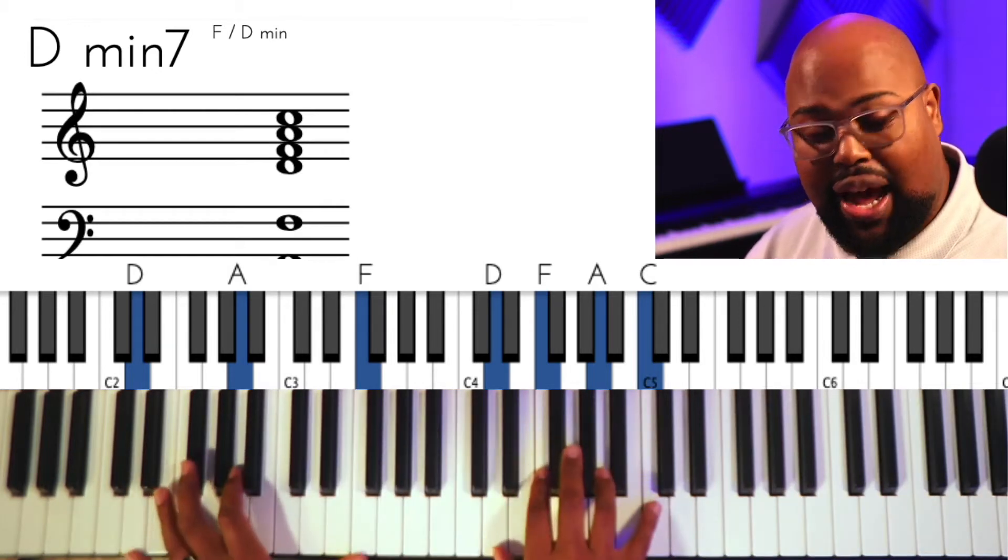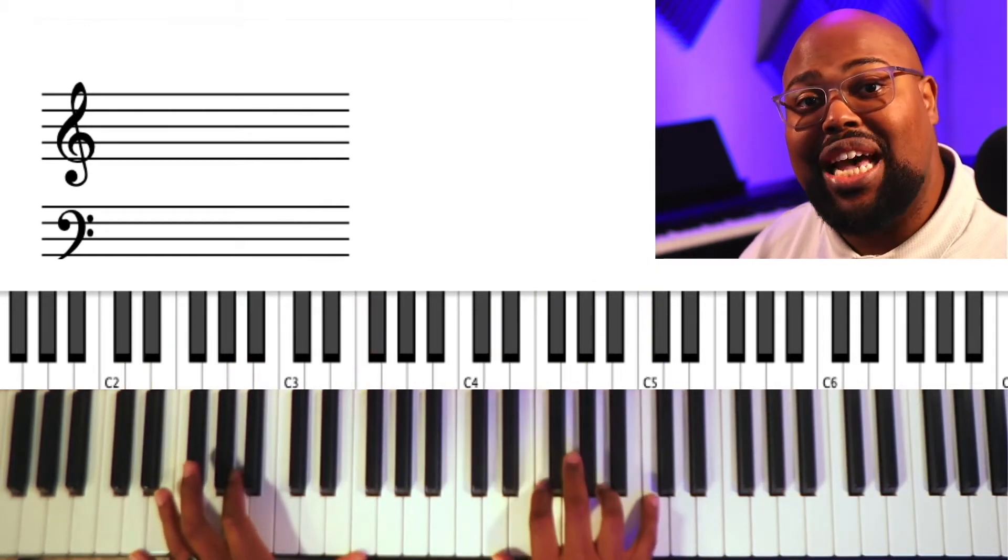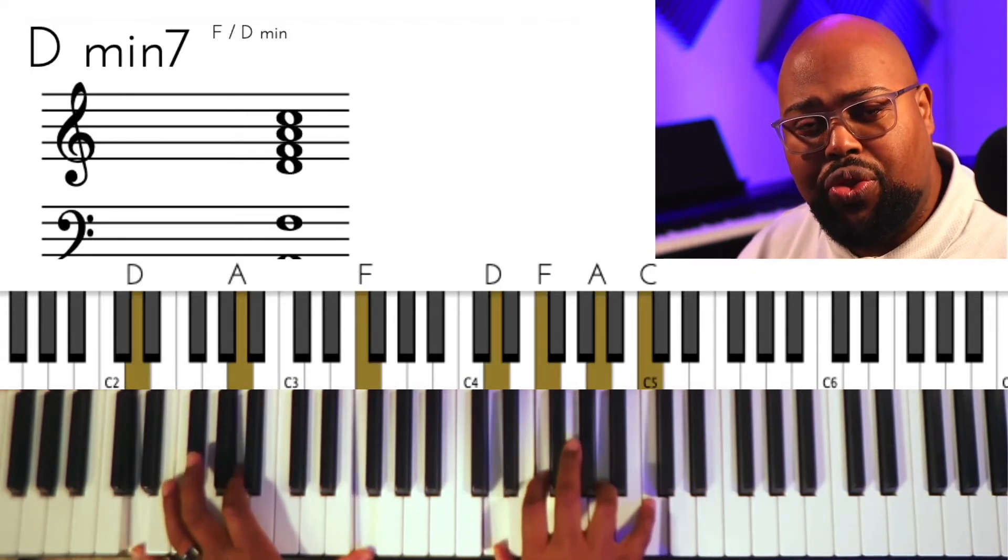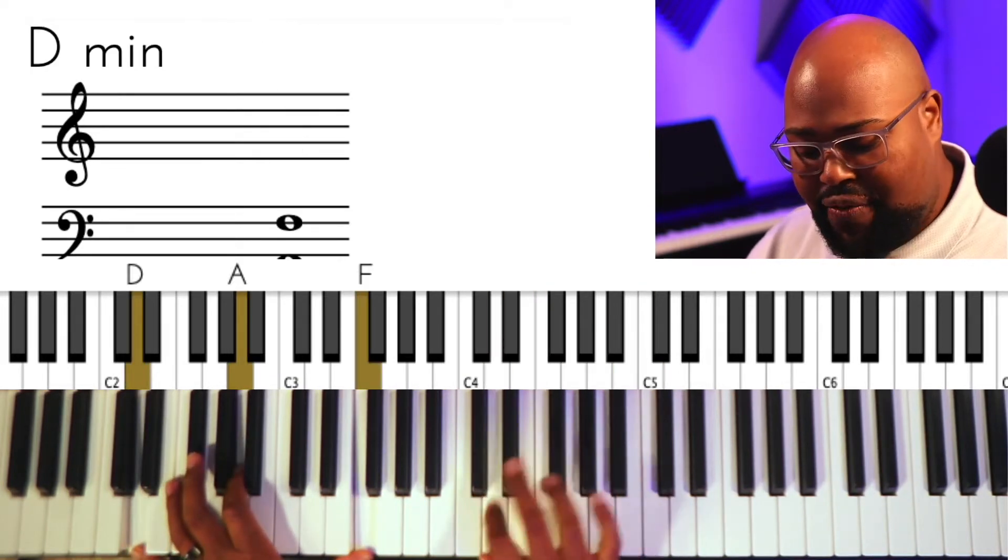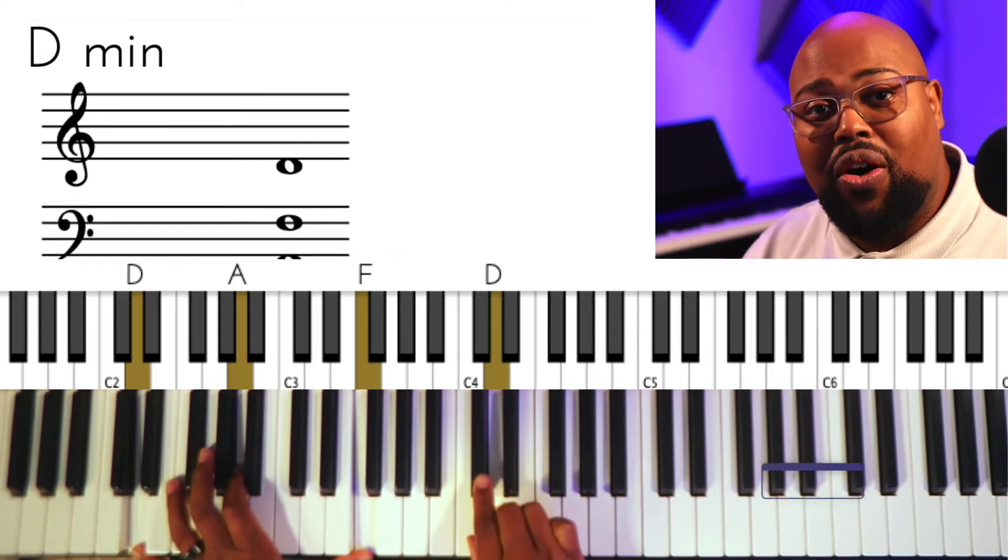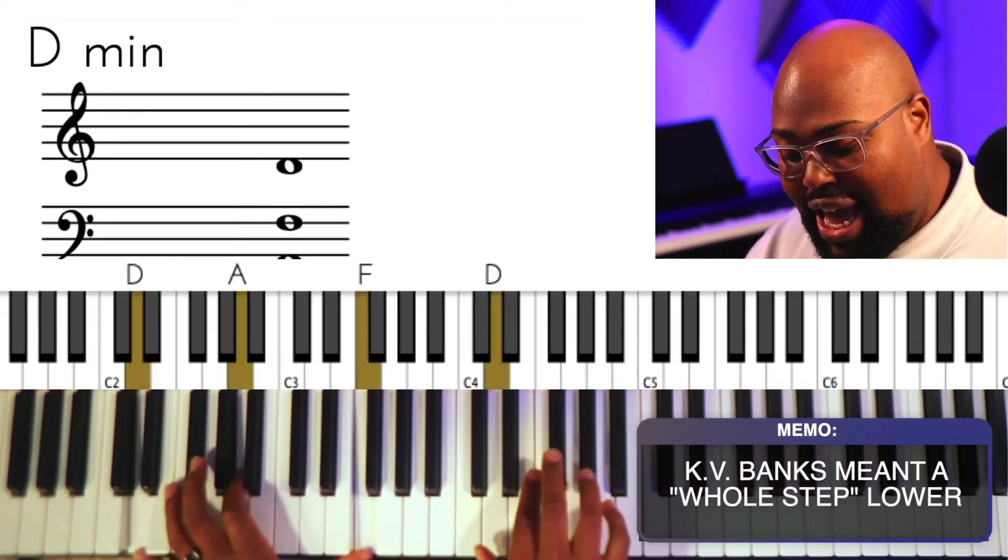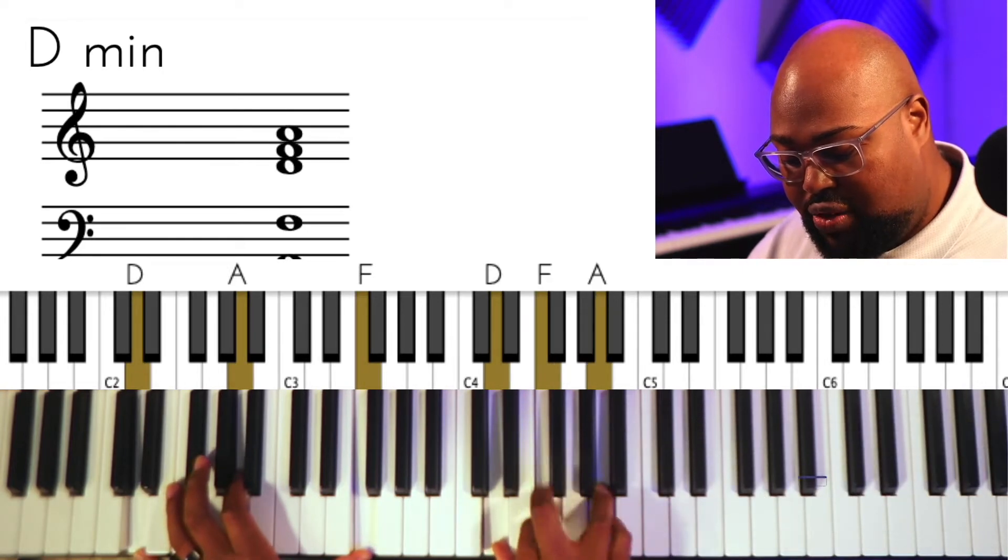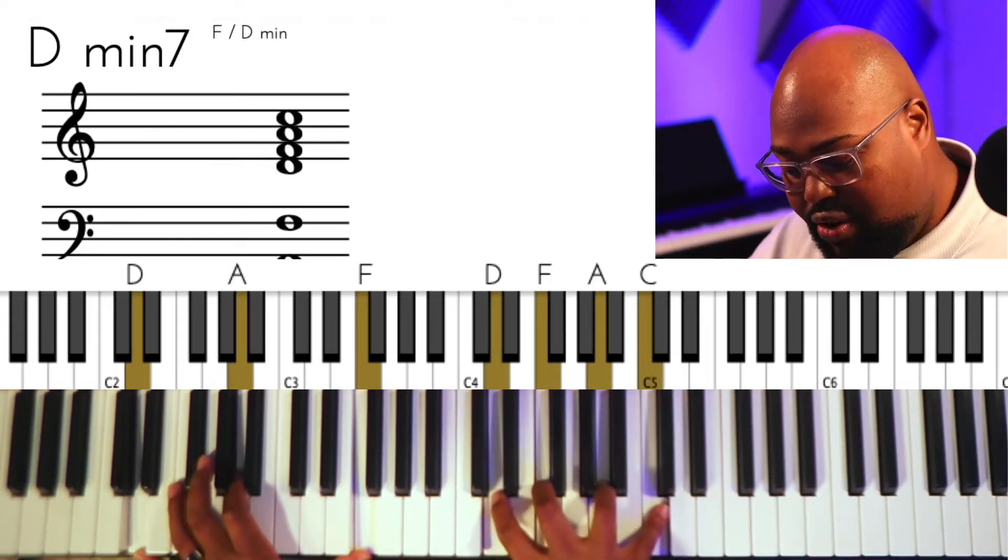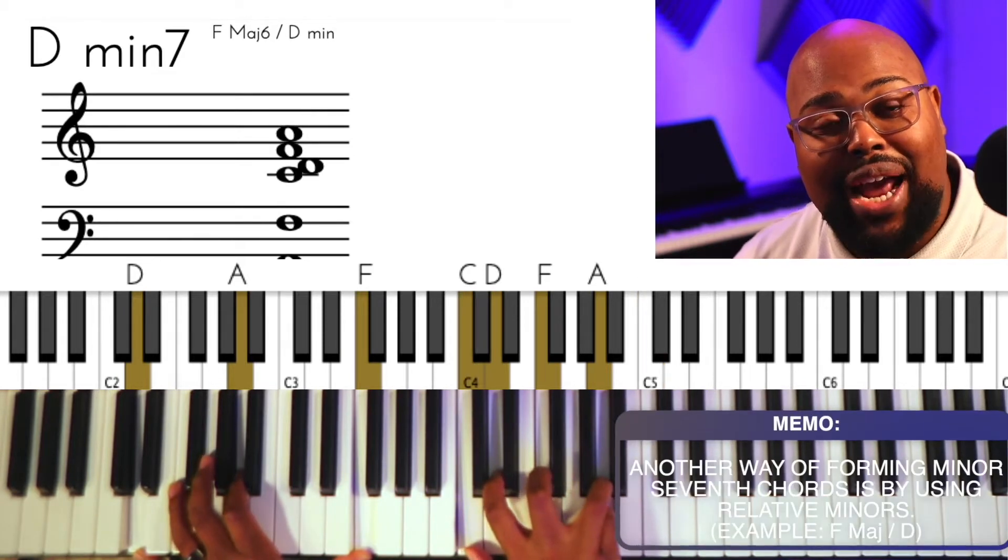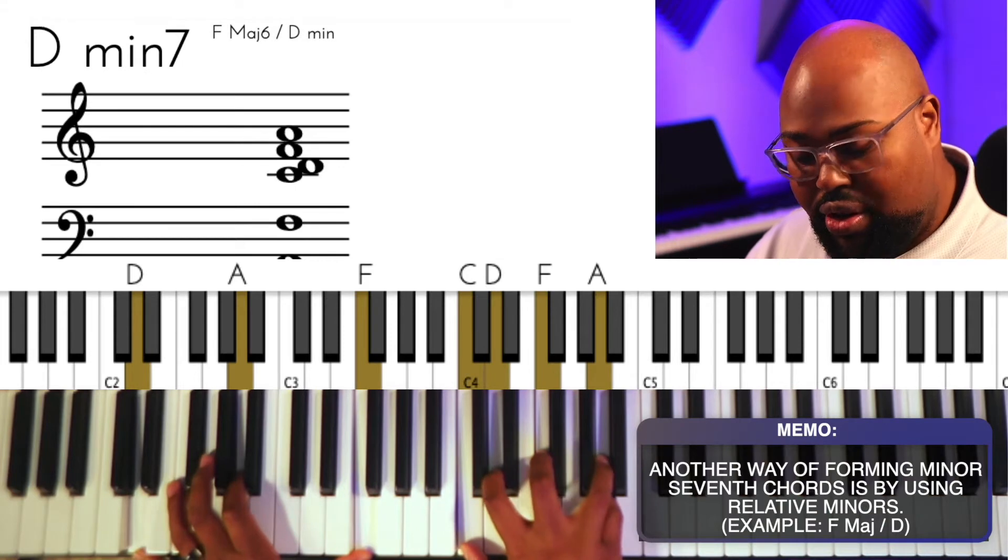The easiest way of looking at this, how to form a minor 7 chord, because that's going to be very important, is that I'm going to say, what's the root note? The root note is a D. A half step lower from the root note would be the C. So if I was to add the C, I can either have it here or up top. Adding that C would give me that minor 7.